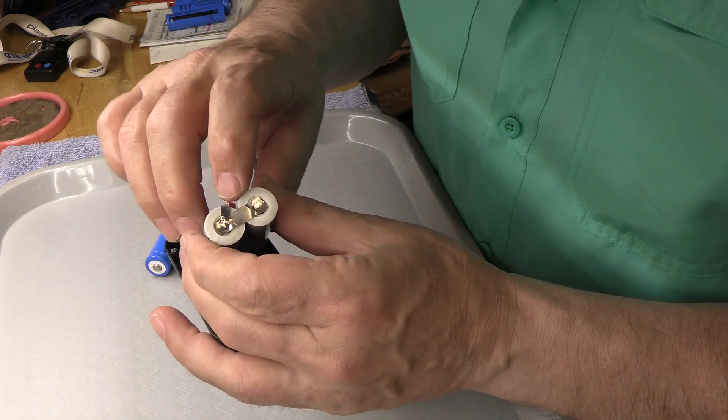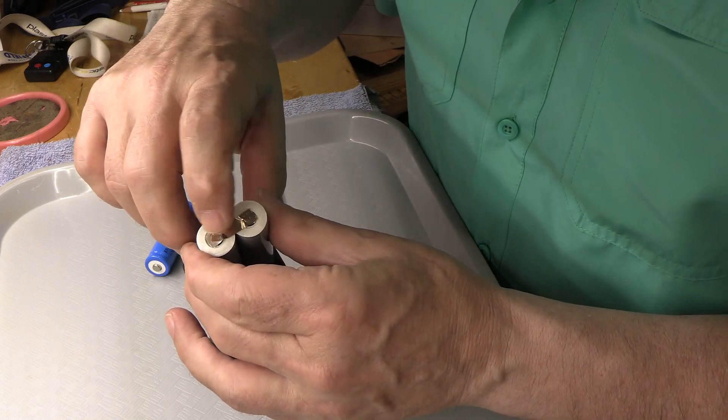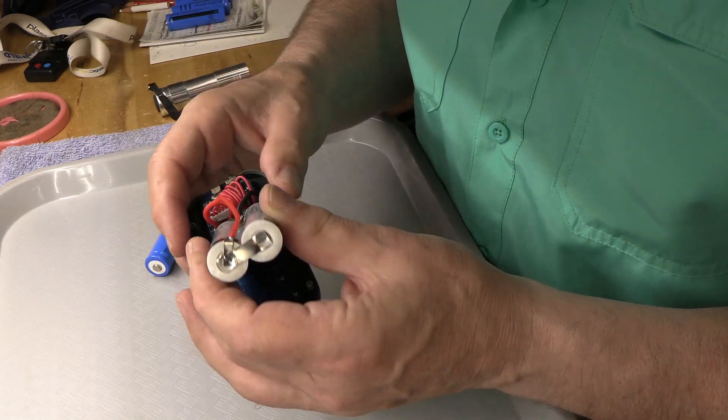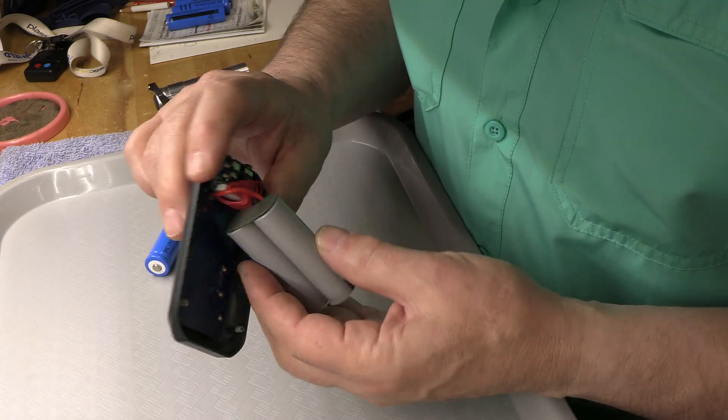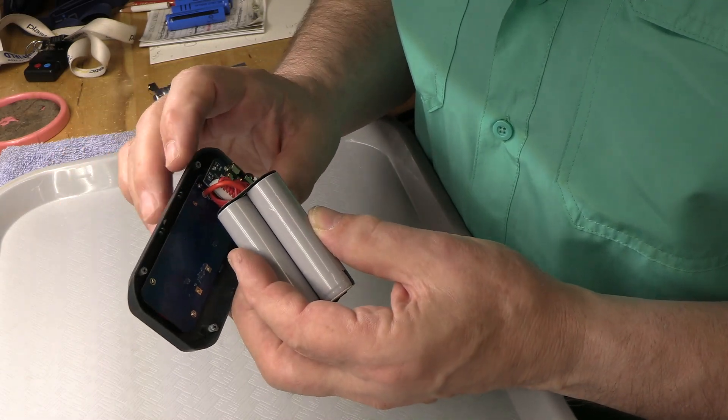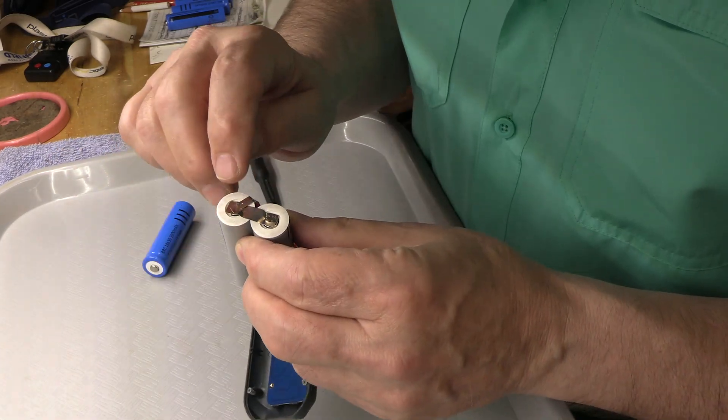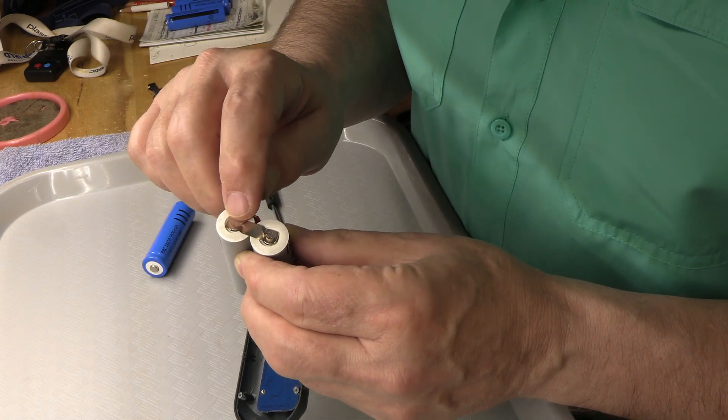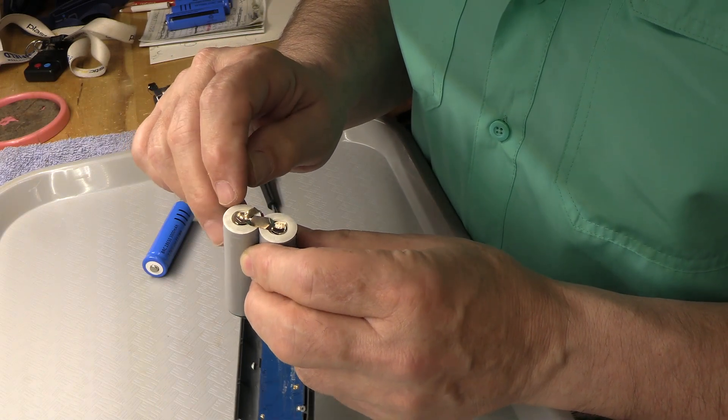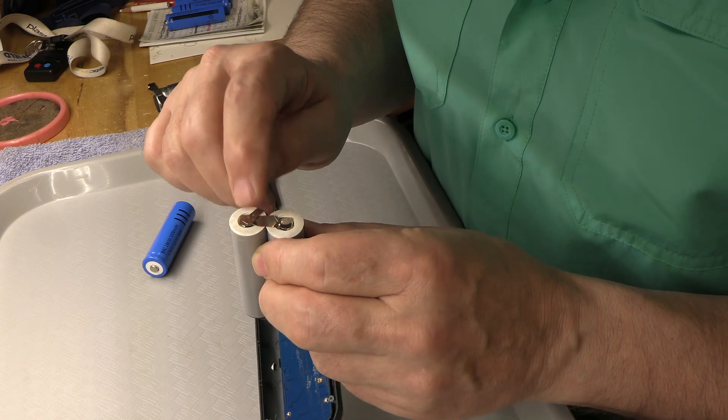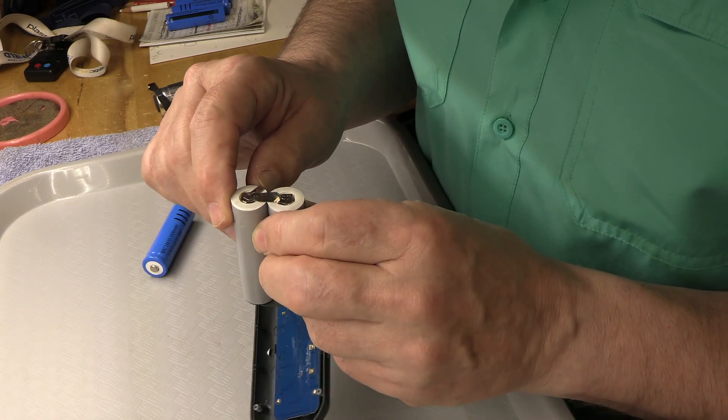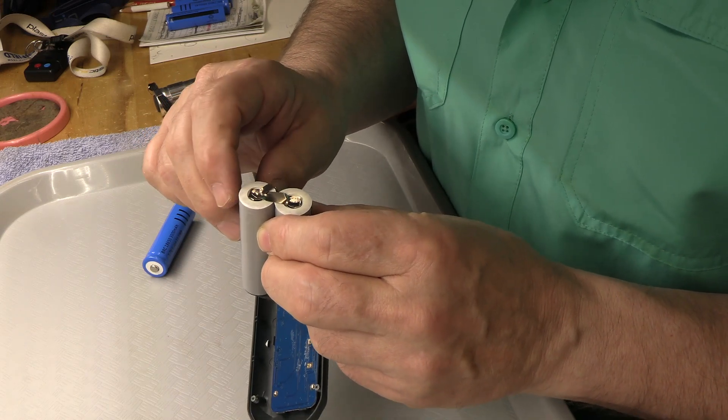You can see it's soldered to a plate. This is probably a nickel strip, and the same over here but with a little bit of insulation so it doesn't short out. So the first thing we're going to do is get the soldering iron out and see if we can break this free.